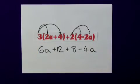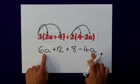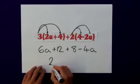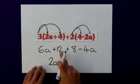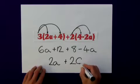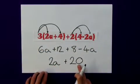Now, using the simplifying expression technique from before, I can put the a's together. 6a minus 4a will give me 2a, and the 12 plus the 8 will actually give me 20. And I've gone from quite a complex expression to a simplified one.